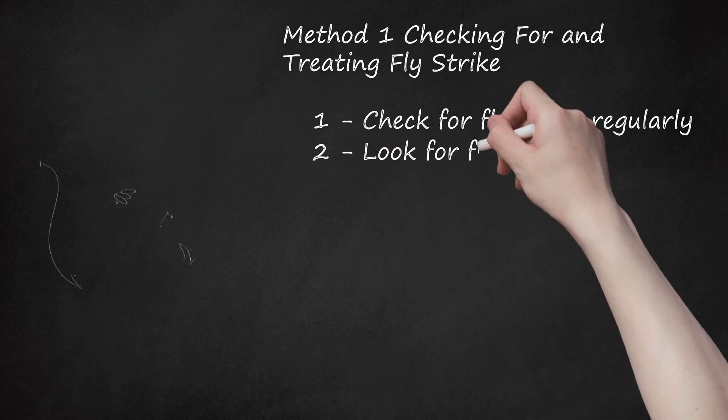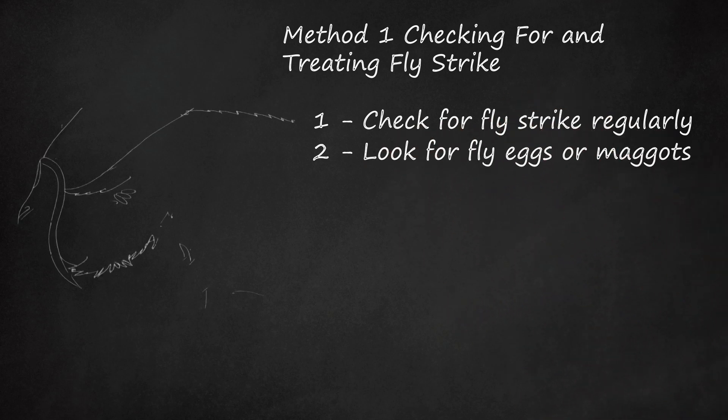2. Look for Fly Eggs or Maggots. You should know what you are looking for when checking your rabbit. Fly eggs are pinhead-sized white glistening objects. Maggots vary in size from short thread-like objects to plumper and worm-like objects.